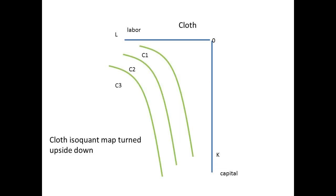Now, here is a neat little idea. We turn the isoquant map for cloth upside down. It is still the same map. O is still the origin, and OL the total supply of labour, and OK the total supply of capital. An increase in labour is now shown by moving from right to left along the x-axis, and an increase in capital by moving from the top to the bottom along the y-axis.